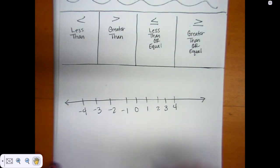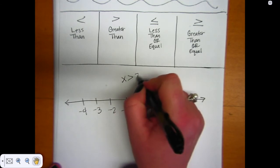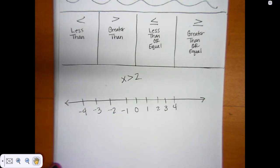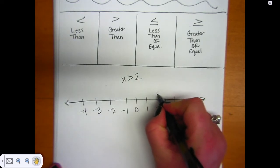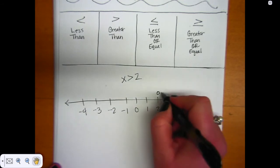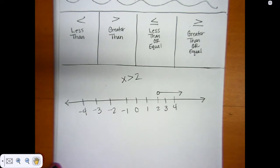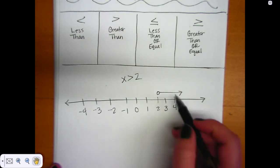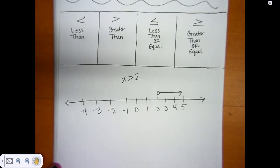If I wanted to graph x is greater than 2, I would put an open dot above the 2, and since x is greater than, I would draw my arrow to the greater than direction. I put that open dot because it does not say x is equal to 2. So we know that x is going to be more than 2 — it could be 3, 4, 5, 10, or 1 million. We don't know what x is; we only know that x is greater than 2.